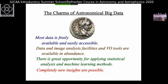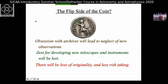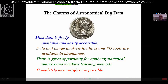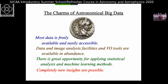What are the charms of astronomical big data? Most data is freely available and easily accessible. If you try to get certain kinds of biological or chemical data, you'll find it is not easily accessible because of commercial implications. In astronomy we are free of those constraints — astronomers have always been used to distributing data freely and developing available technology.